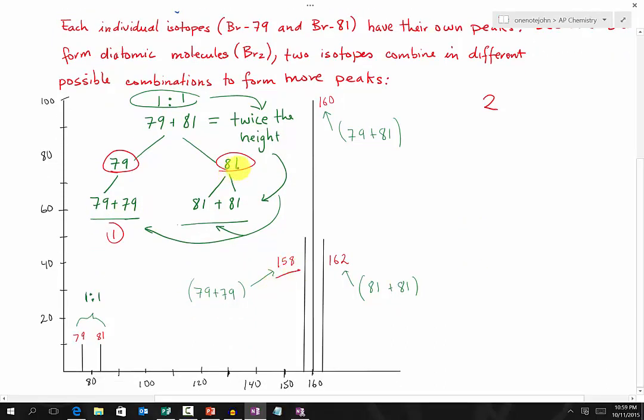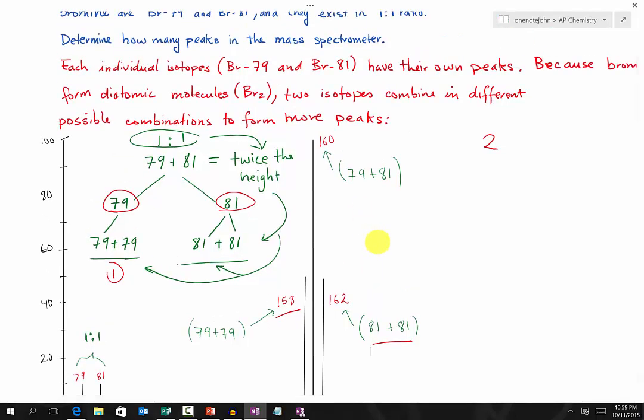Or we could have 81 combined with 81, bromine-81 and bromine-81 together, giving us one more peak at 162. Or lastly, 79 plus 81 combined together gives us 160.